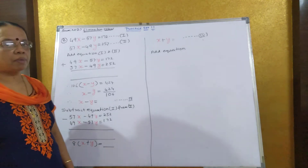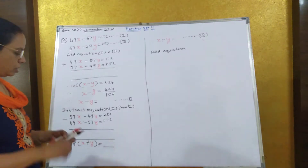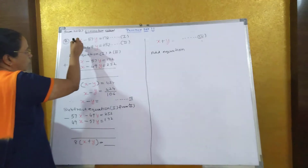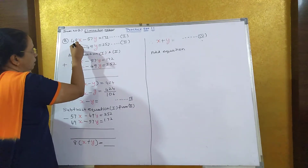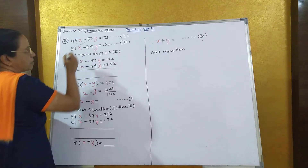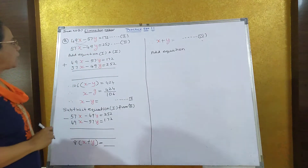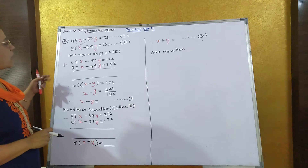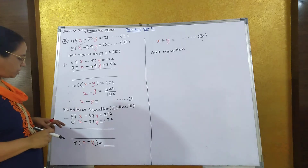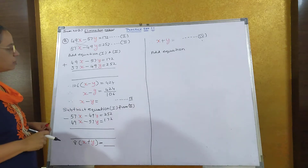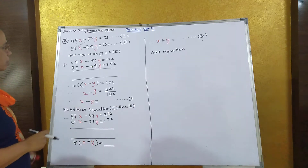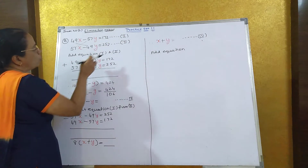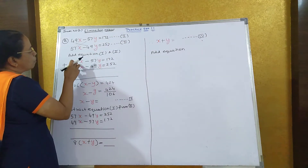Last sum, sum number 2. Here also the cross numbers are the same: 49, 49 and 57, 57. Like the previous sum, first we have to add both the equations and next we have to subtract both the equations. When I add equation 1 and 2, what do I get?